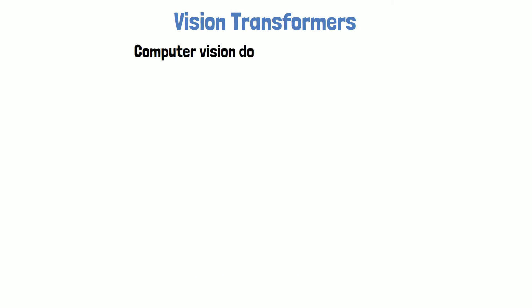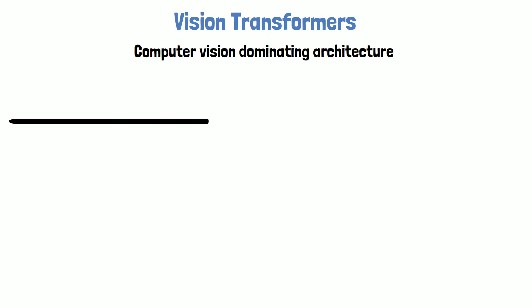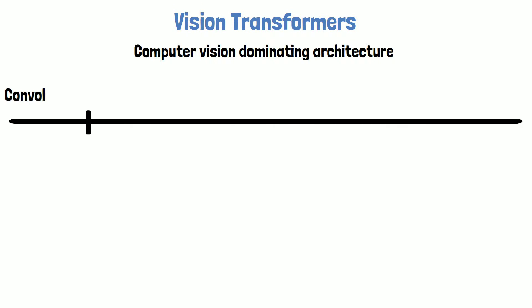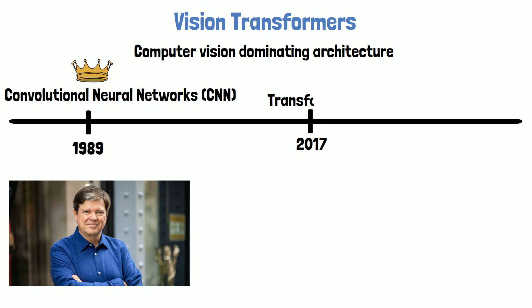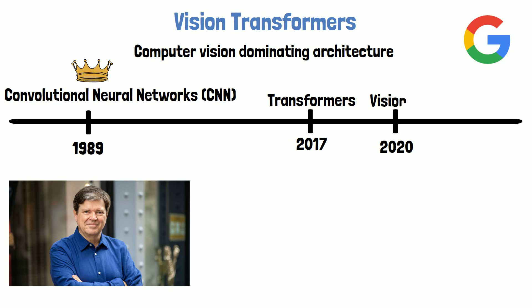Thank you for joining this video about vision transformers. Up until vision transformers were invented, the dominant model architecture in computer vision was CNN, or Convolutional Neural Network, which was invented in 1989 by famous researchers including Yann LeCun and Yoshua Bengio. In 2017, transformers were invented by Google and took the natural language processing domain by storm, but were not adapted successfully to computer vision until 2020, when Google introduced vision transformers.